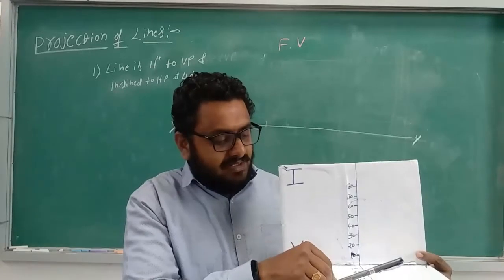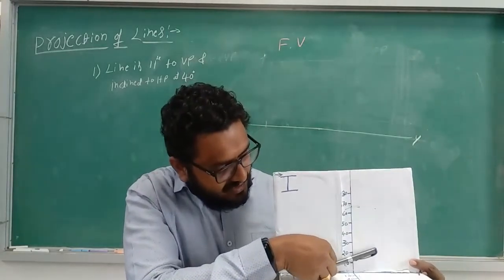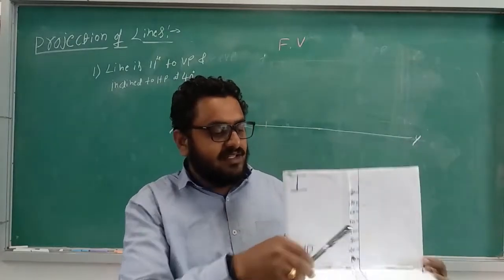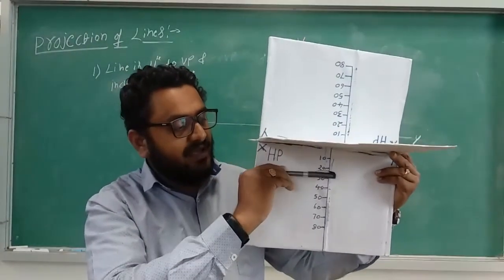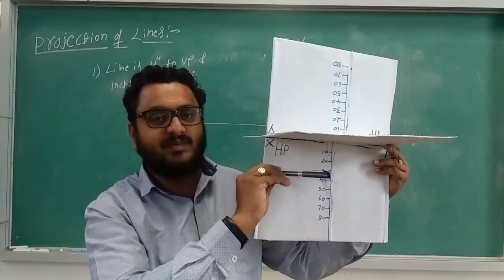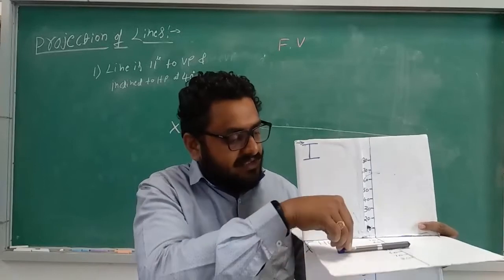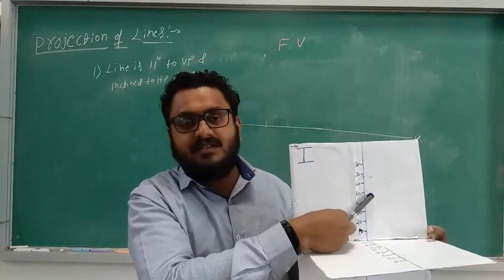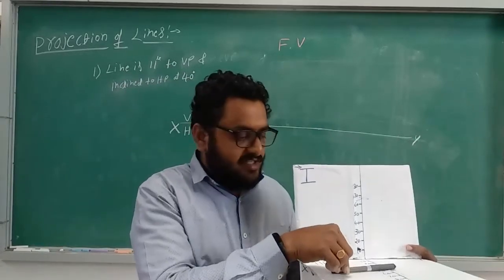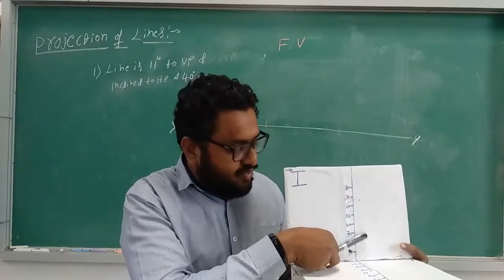One more thing to observe: when I am inclining the line, there is a change in angle. I can see this angle change in the front view because the line is inclined to HP. But when you see it from the top, you cannot see the angle change — only the line keeps reducing in length. The distance change can be seen, but the angle cannot be seen from the top. That's why, when we change the angle with respect to HP, the change in angle can be seen in the vertical plane. Key point: inclination with respect to HP should be shown in VP.